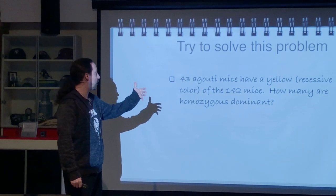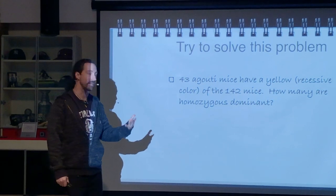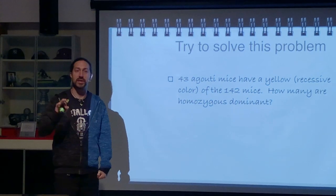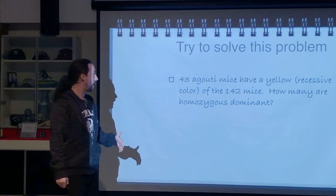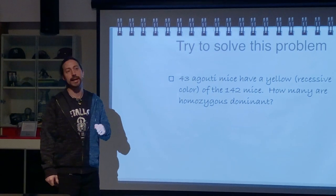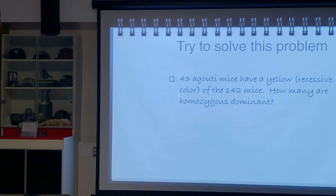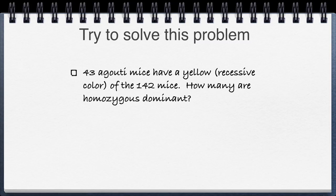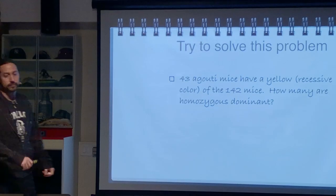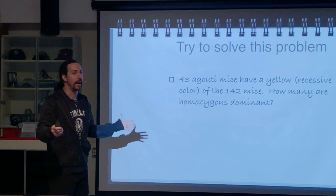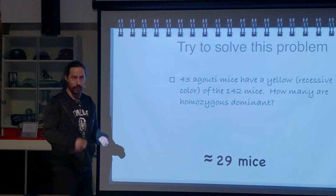Now let's try another problem. We have 43 agouti mice — recessive trait, so homozygous recessive — out of a total of 142 mice. Just like the last problem with changed numbers: how many would be homozygous dominant? Give it a shot. When I solved this, I got about 29 mice — hopefully that's what you got too.